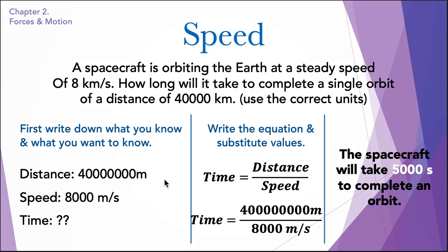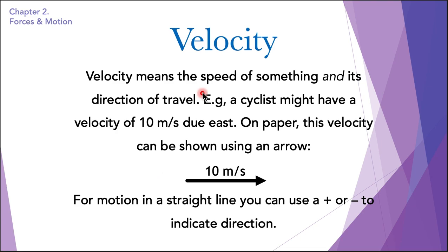Most people confuse velocity with speed and think they are the same thing, but they are not. Velocity means the speed of something and its direction of travel. Velocity is a vector quantity and speed is a scalar quantity. Scalar quantities are physical quantities which only have magnitude but no direction. Vector quantities have magnitude as well as a direction of travel. For example, a cyclist might have a velocity of 10 meters per second due east.